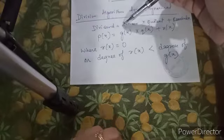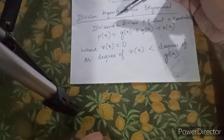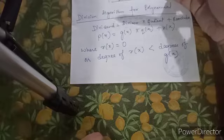We already know from primary classes that dividend equals divisor times quotient plus remainder.